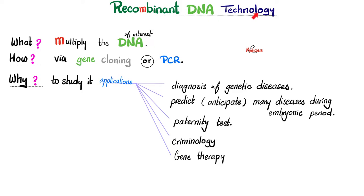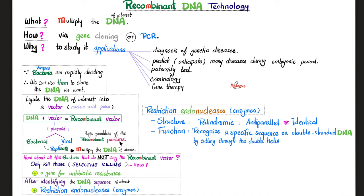Today's topic: recombinant DNA technology. Basically, we are multiplying the DNA of interest — as many copies as you want. How do you do it? Gene cloning or polymerase chain reaction. Why should we multiply the DNA of interest? Because we can use this to diagnose genetic diseases, predict many diseases even in the womb, paternity testing, criminology, and gene therapy. Bacteria and viruses are rapidly dividing, so let's use them to clone and multiply the DNA of interest.